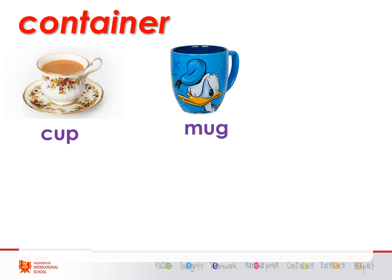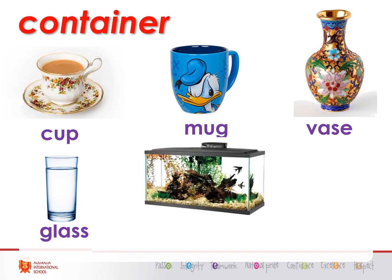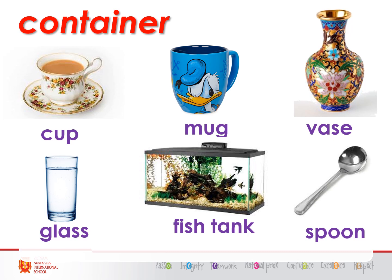Some more containers. Can you say cup? Cup. Mug. You'll notice a cup and a mug look very similar, but a mug is normally bigger. And a vase — in America they say vase, so you can say vase like me or vase like Americans. Next we have a glass — a glass of water. And we have a fish tank, and a spoon.